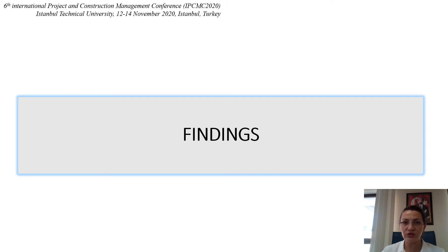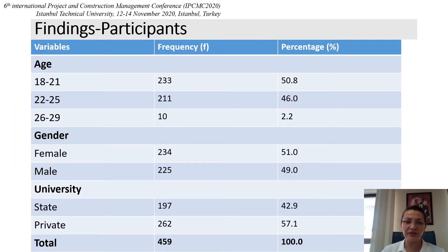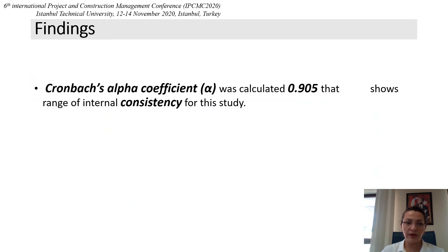When we look at the findings of this research, I want to start with the characteristics of participants. Participants were between 18 and 29 years old and included both males and females. University type representation consisted of 262 students educated at a private university and 197 students at a state university. Reliability analyses were conducted on the 32 academic stressor items, and Cronbach's alpha coefficient was calculated as 0.905, indicating strong internal consistency for this study.